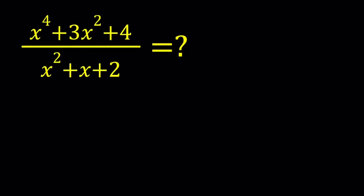Hello everyone. In this video, we're going to be simplifying a rational expression. We have x to the fourth power plus 3x squared plus 4 divided by x squared plus x plus 2, and we're going to simplify this expression.